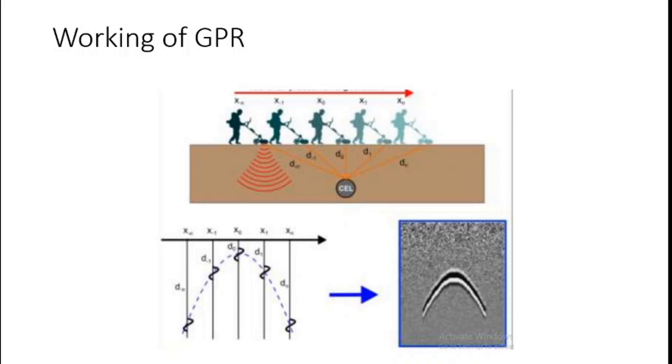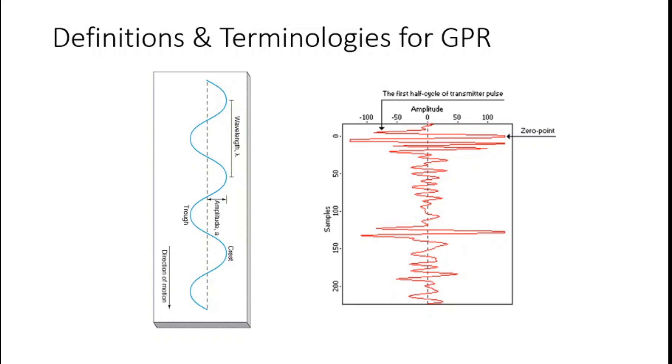So what is the working? As you can see here, this person is walking with this GPR unit and the subsurface is getting mapped. As he comes from position X0 to X1, X9 up to XN, we are getting the image on the left hand side on the bottom, the wiggle plot. We're going to discuss the wiggle plot more in next slides. Basically a hyperbola will be generated on this subsurface utility and this wiggle plot then converted to the pictorial representation given on the right hand side. This is the working of GPR.